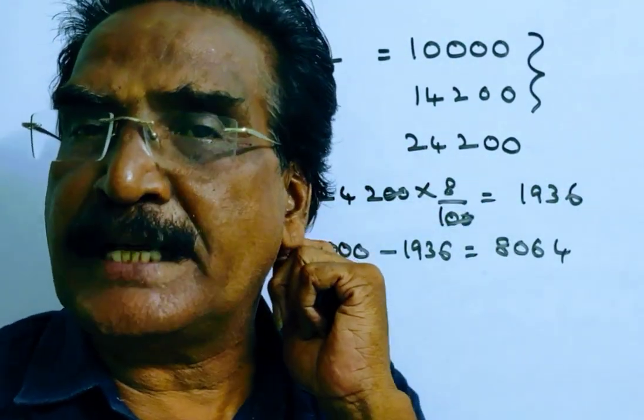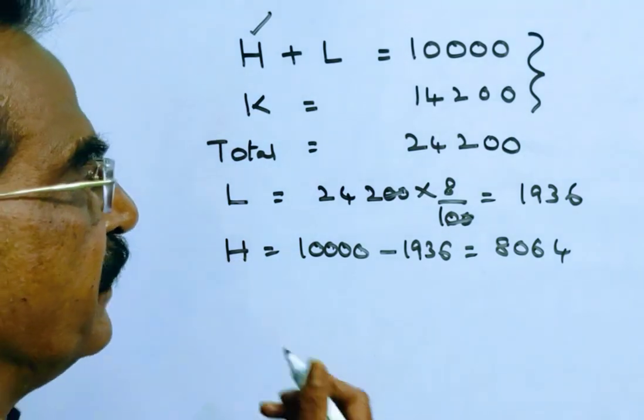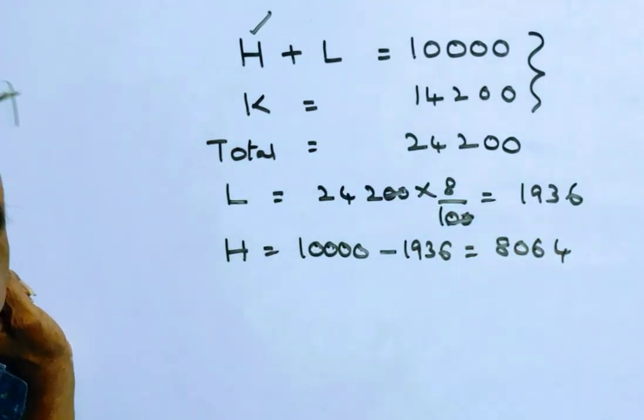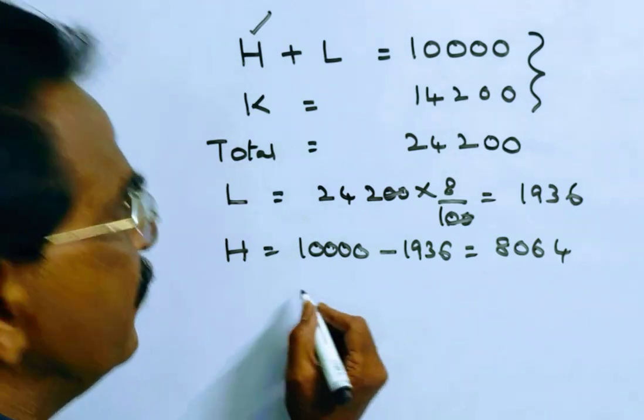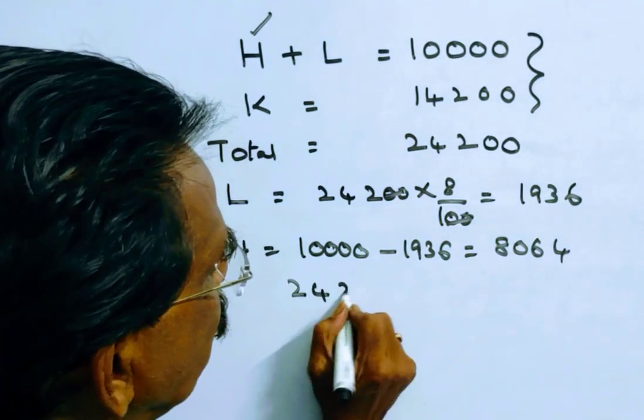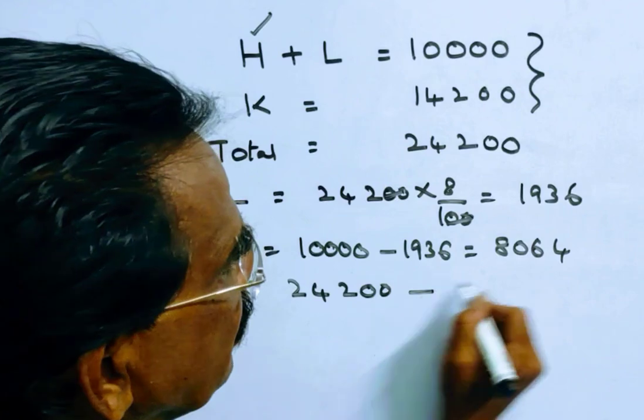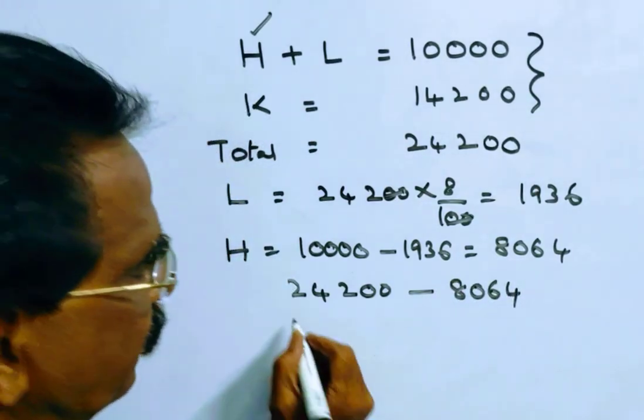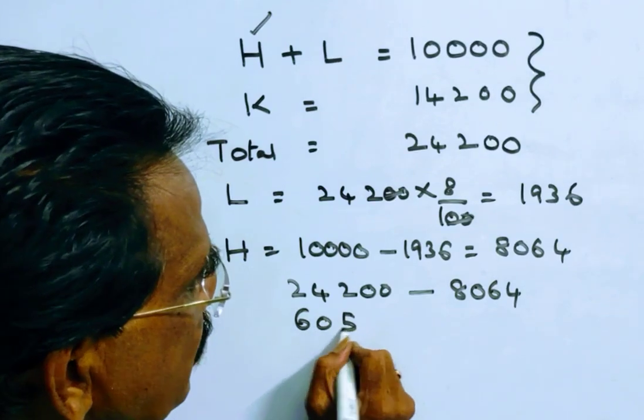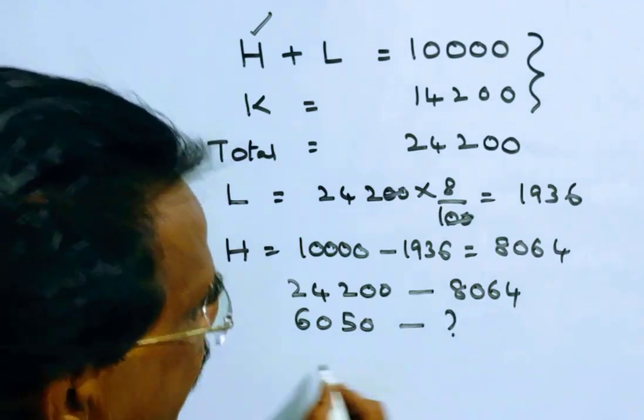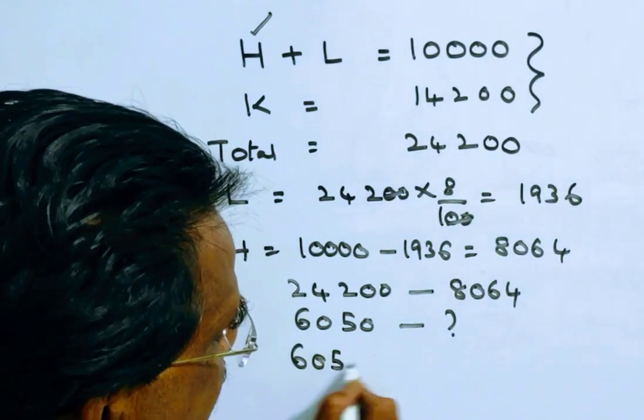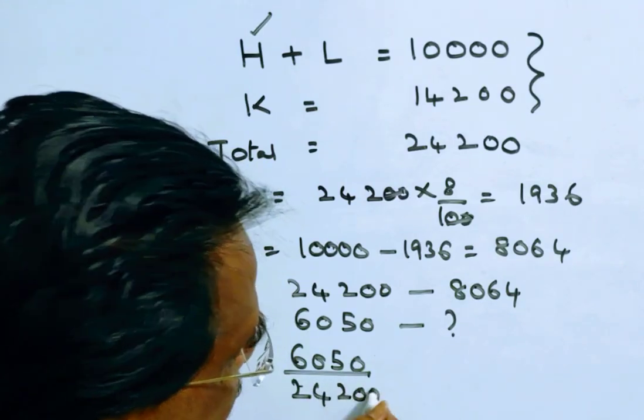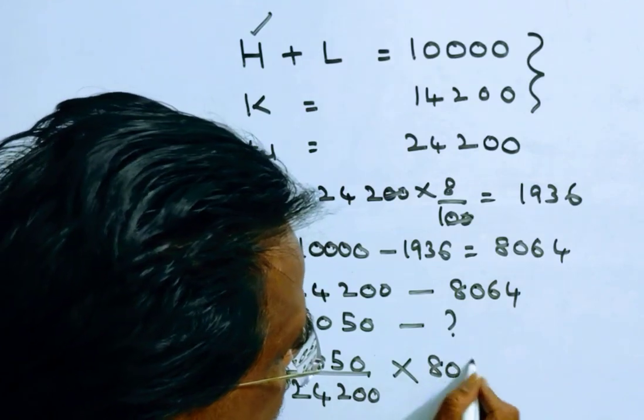Now the total votes polled is given as 6050. If the total votes is 6050, then the votes polled by Hari is 6050 over 24,200 into 8,064.